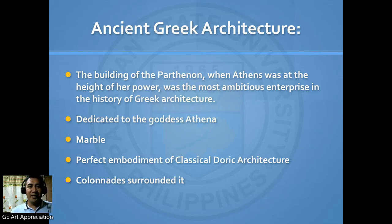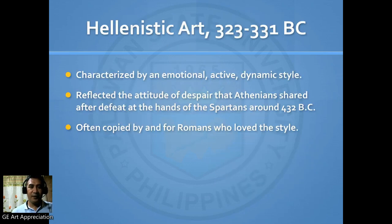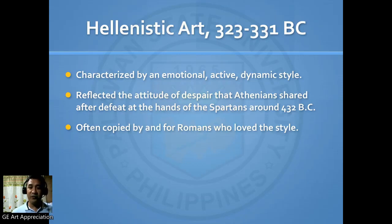Let's proceed with ancient Greek architecture. Their architecture is more dedicated to the goddess Athena. Here we have the Parthenon, dating from 448 to 432 BC in Athens. We also have Hellenistic art during 323 to 31 BC, characterized by an emotional, active, dynamic style. It also reflected the attitude of despair that Athenians shared after the defeat at the hands of the Spartans around 432 BC.